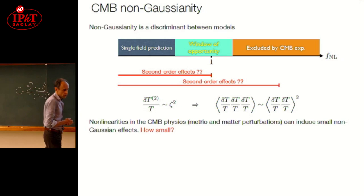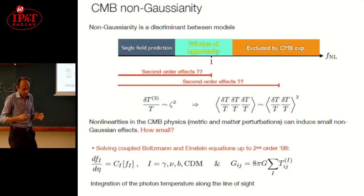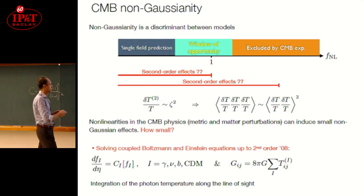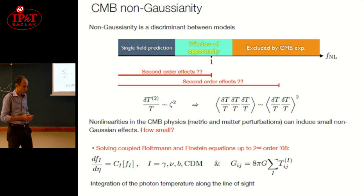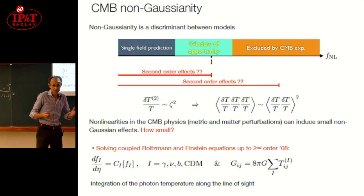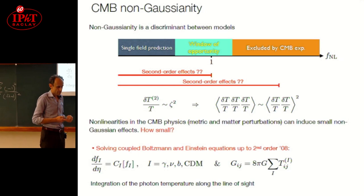A way to study this is to build a code that solves all the Einstein and Boltzmann equations coupled for the species in the universe up to second order in the perturbations. These are very complicated to develop and for some time there were different codes giving slightly different predictions. But this was very important for the interpretation of this data.